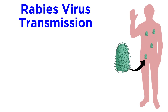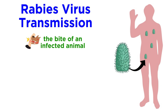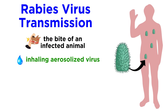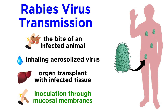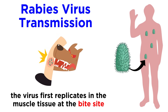Now that we know what's happening on a cellular level, let's zoom out and think about what happens in the body of someone who's been infected. The rabies virus can be introduced from the bite of an infected animal, by inhaling aerosolized virus in places like bat caves, from an organ transplant with infected tissue, or by some other inoculation through the mucosal membranes, like a scratch. Bites are the most common transmission method, and it's specifically the saliva of the infected animal that transmits the virus. First, the virus replicates in the muscle tissue at the bite site, which is part of the incubation phase, but there are typically no symptoms at all during this phase.